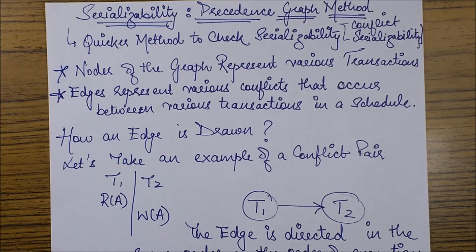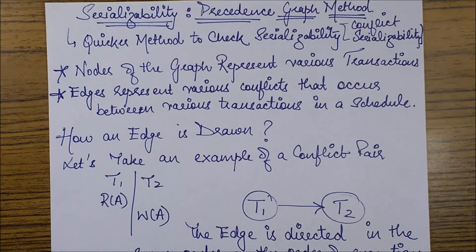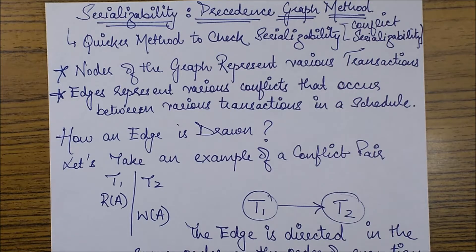Hello friends. In the previous session we dealt with conflict serializability, and now in this session we are going to study a shortcut method to find out whether a particular schedule is conflict serializable or not. That method is termed as the precedence graph method — a quicker method to check upon serializability.